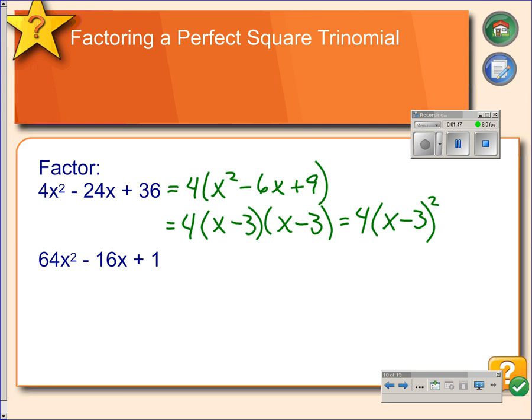In the second example, this is a perfect square because 64x squared is a perfect square, 1 is a perfect square, and 8x times 1 is 8, and then double that, and it gives us 16. Since this is negative here, we're going to want a minus, and then quantity squared.